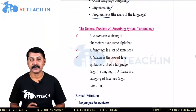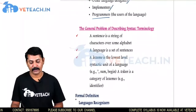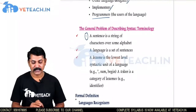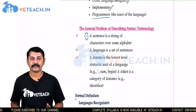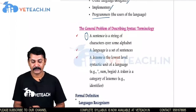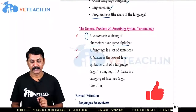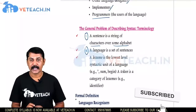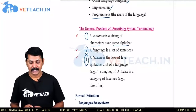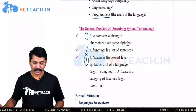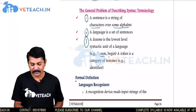The general problem of describing Syntax terminology is: first, a sentence is a string of characters or alphabets. Generally a Syntax must follow the instruction with a flow of string of characters and alphabets. Second, a language is a set of sentences — that means a collection or group of sentences. Third, a Lexeme is the lowest level syntactic unit in a language, for example words like 'sum' and 'begin'.